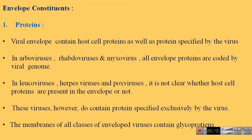The viral envelope contains two kinds of proteins: host cell-derived proteins and proteins specified by viral genes. In viruses like arboviruses, rhabdoviruses, and myxoviruses, all envelope proteins are coded by the viral genome — there are no host cell membrane-derived proteins. In leukoviruses, herpesviruses, and poxviruses, it is not entirely clear whether host cell proteins are present, but these viruses always contain proteins exclusively specified by the virus. The membranes of all classes of enveloped viruses contain glycoproteins.